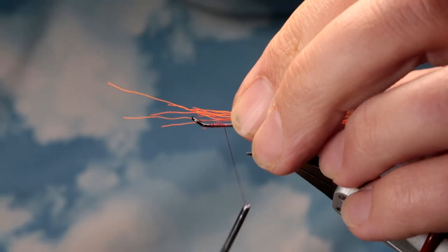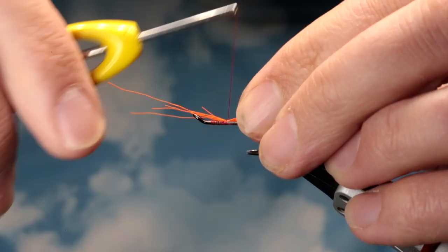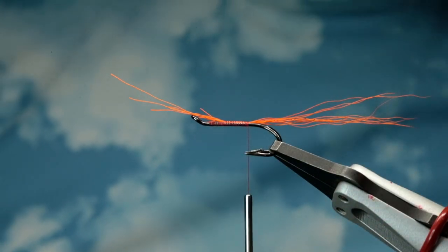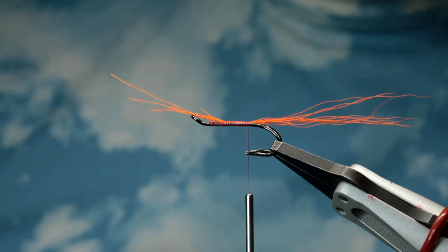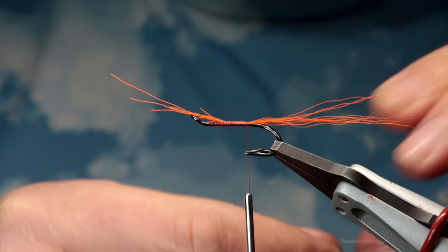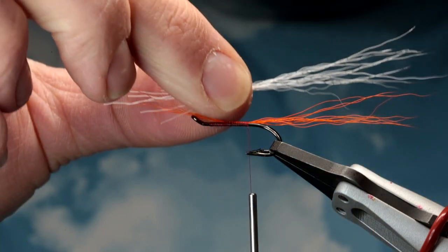So the first bit I'm going to tie in is a bit of orange bucktail again, nice and sparse, not too much. This is an Anrex size 6 nickel double. And then on top of that, rather than mixed on top of it, I'm going to tie in some white bucktail.